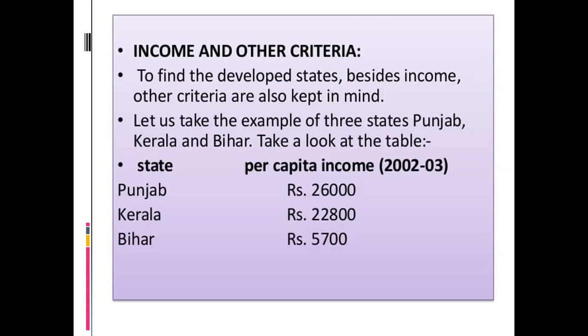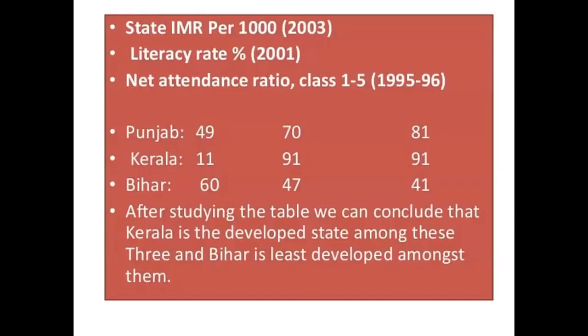But the reality is different. Let us look at certain other data pertaining to these states: infant mortality rate, literacy rate, and net attendance ratio. Infant mortality rate is the number of children that die before the age of one year as a proportion of 1,000 live births in that particular year. Literacy rate means the proportion of literate population in the age group of 7 and above. Net attendance ratio is the total number of children of age group 6 to 10 attending school as a percentage of the total number of children in the same age group.